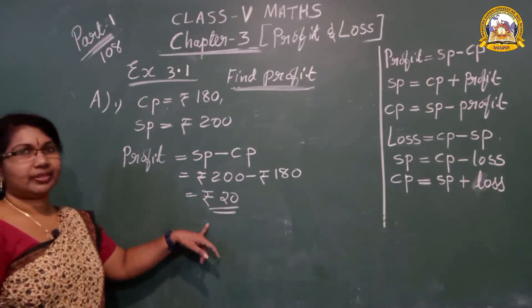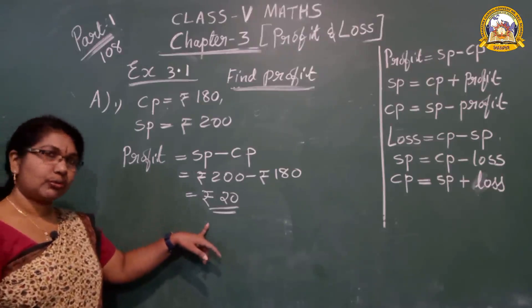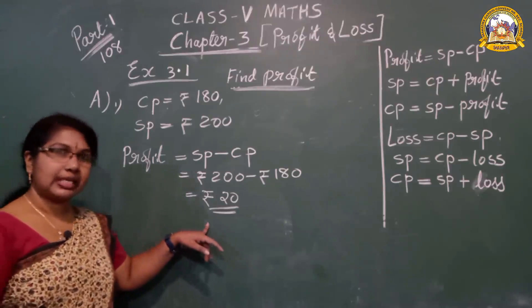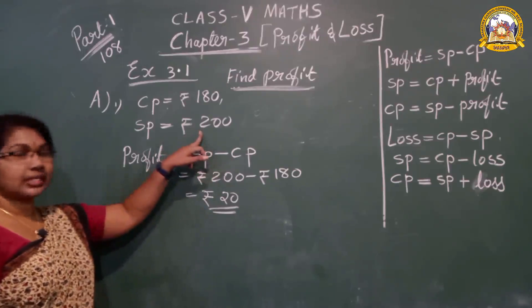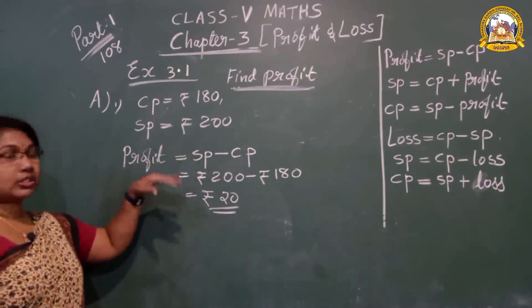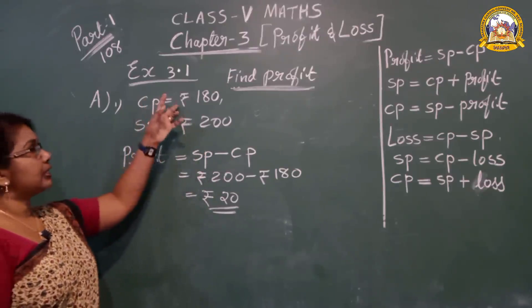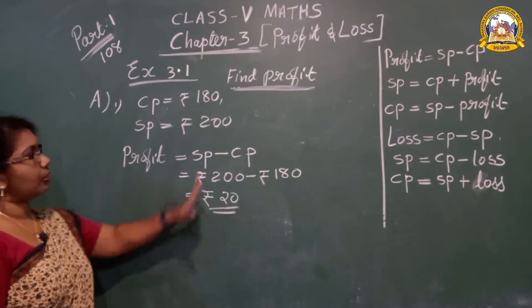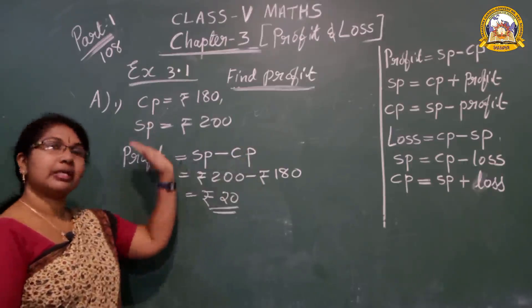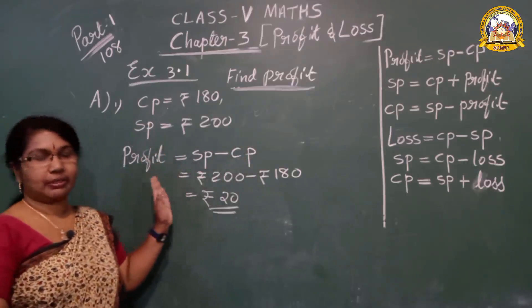Profit formula — which is greater? Selling Price. Where it is loss, CP is greater. So just use the opposite formula: CP minus SP.